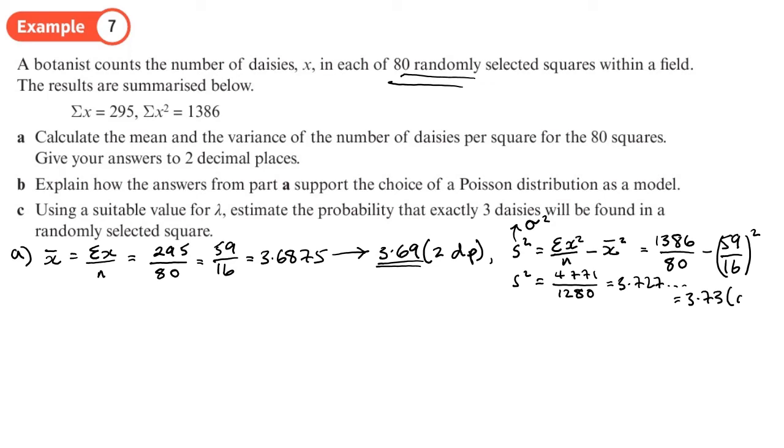Part b: explain how the answers from part a support the choice of a Poisson distribution as a model. Now in the past with Poisson we've said things happen at a constant rate, they're independent, they happen at a mean rate in space or time, not in clusters. But they're asking us about part a. In part a we've just worked out the mean and the variance, and what do we know about the mean and the variance for a Poisson distribution? They're equal. They're very, very close. We've got 3.69 and we've got 3.73—they're close. So this could be modeled by a Poisson distribution not because of all the other stuff, but because of what we did in part a. That's the important thing—look at your previous answer. What's that telling you?